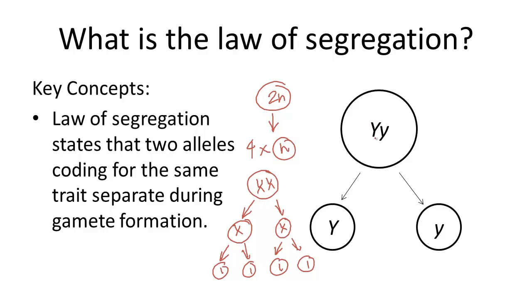So for example, if you were talking about pea color, you have a yellow allele and a green allele. The yellow allele would be found on one homologous chromosome and the green allele will be found on the other.